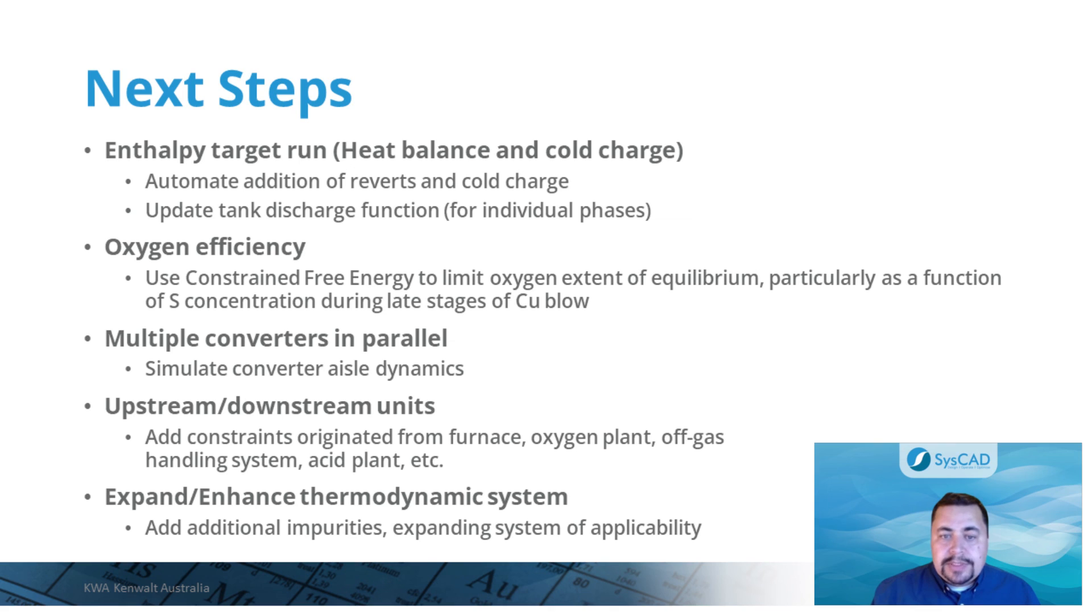The next steps for this model include finalizing enthalpy target runs and automate the addition of reverts and cold charge for temperature control. Implement oxygen efficiency using the constraint free energy method to limit the extent of oxygen equilibrium, particularly as a function of sulfur concentration during the late stages of the copper blow. It will also be interesting to simulate multiple converters in parallel to simulate the sequence of an entire converter aisle, and add upstream or downstream equipment constraints, such as furnace, oxygen plant, off-gas handling system, acid plant limitations, etc. Finally, expanding or enhancing the thermodynamic system by adding minor elements or impurities to increase the applicability of this model.